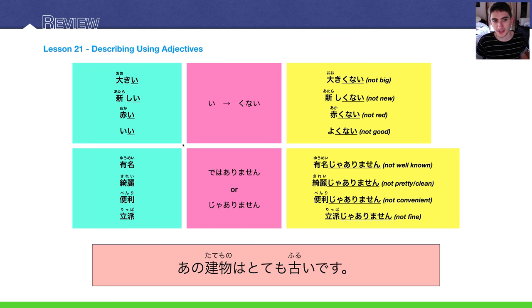Another type of adjective that you have in Japanese are the na adjectives. Here are some right here: yuumei, kirei, benri, rippa - famous or well-known, pretty or clean, convenient, and then splendid, rippa.